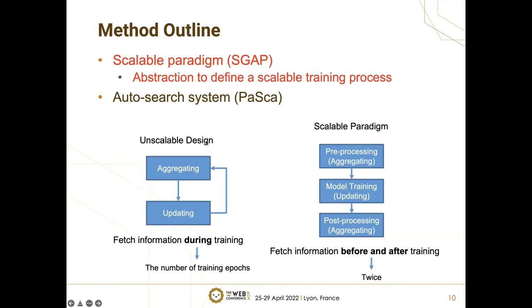To tackle the scalability issue, we introduce two parts of our method in detail. The first part is SGAP, an abstraction to define a scalable training process. The traditional iterative process requires fetching neighborhood information from other machines during every epoch of training. Instead, our scalable process places the aggregating stages before and after the training stage, needing to fetch information only twice — in the pre-processing and post-processing stages. In this way, SGAP architectures reduce the communication costs caused by neighborhood expansion during training and thus enjoy higher scalability in distributed scenarios.